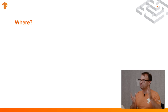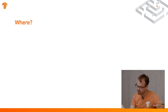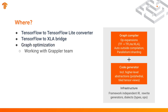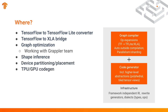So where are we applying MLIR? The first application is the TensorFlow to TensorFlow Lite Converter — it's pre-alpha and working for a couple of models, with a couple of new features coming in that enable some new TensorFlow Lite features. The other target is the TensorFlow to XLA Bridge, looking at the current lowering to XLA as well as accelerators. We're working with the Grappler team on graph optimizations, shape inference, device partitioning, and placement. And then we also have the TPU and GPU coding projects going on to evaluate new approaches to generate code for these different devices.